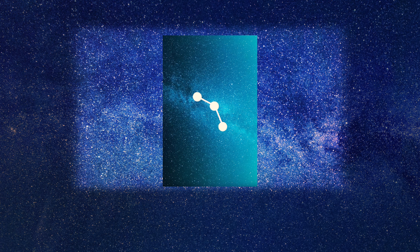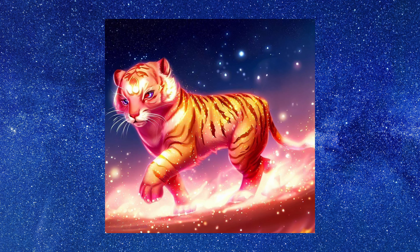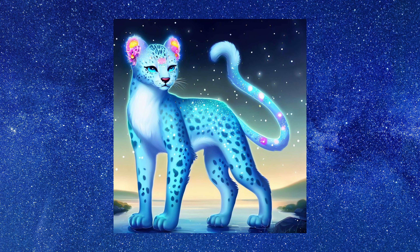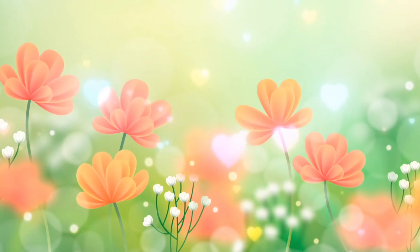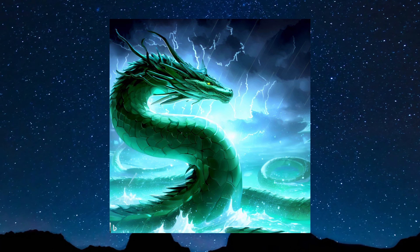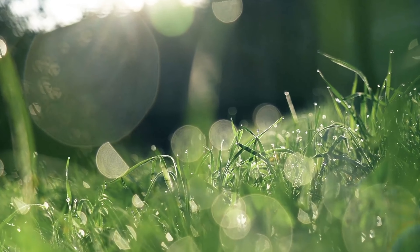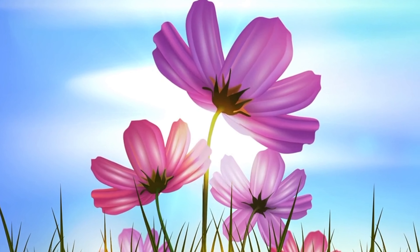Now, check this out. The Azure Dragon is one of the four symbols and guards the eastern section of the sky. It's composed of seven constellations: the Horn Constellation (or Hornwood Scaly Dragon), the Neck Constellation (or Neck Gold Dragon), the Root Constellation (or Root Earth Raccoon Dog), the Room Constellation (or Room Solar Rabbit), the Heart Constellation (or Heart Lunar Fox), the Tail Constellation (or Tail Fire Tiger), and the Winnowing Basket Constellation (or Winnowing Basket Water Leopard).